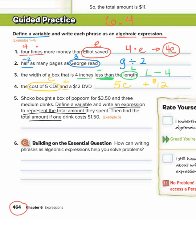We want to write an expression for the amount that they spent. So we know that they spent $3.50 on popcorn. But we don't know how much they spent on 3 medium drinks. So that needs a variable. And I'm going to use the variable D. The word and means addition.